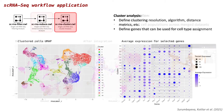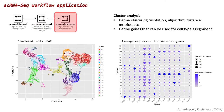Once we finished with the dimensionality reduction and obtained UMAP, we moved to the cluster analysis. In this step, we clustered cells using an array of different resolutions. For each resolution, we identified gene markers and built multiple gene expression plots. Altogether, it helped us to select the resolution that corresponds best to the cell types we expect to see in our datasets. Here we see the clustered UMAP and average expression plot for genes of interest.